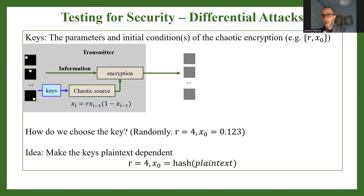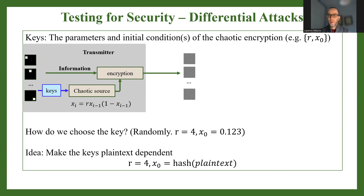Let's assume the attacker doesn't know the keys of the design. For chaotic encryption, the keys are the parameters and initial conditions. For example, using the logistic map, the keys are the initial condition x₀ and the parameter r. The attacker uses the encryption like a black box — they can only supply an input and obtain an output ciphertext.